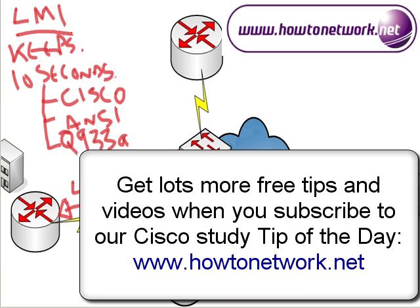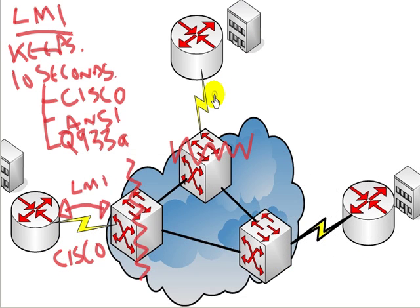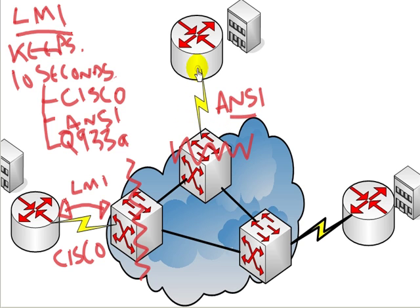LMIs are only significant between your router and the frame relay switch. So technically you could have LMI type Cisco on one end and LMI type ANSI on the other. You'll be told by the frame relay service provider which one to apply to your router, and the only way to get the connection to work is to have the correct LMI type configured on your router.